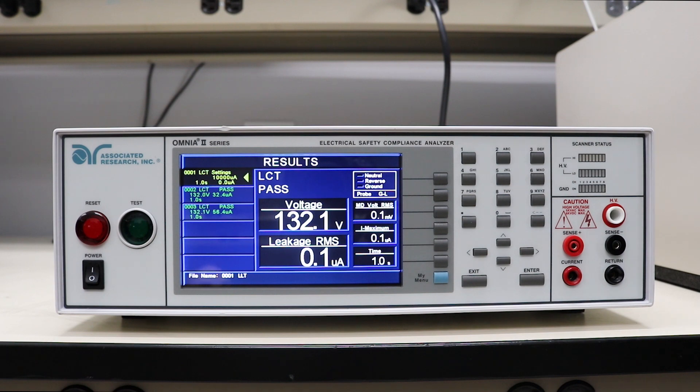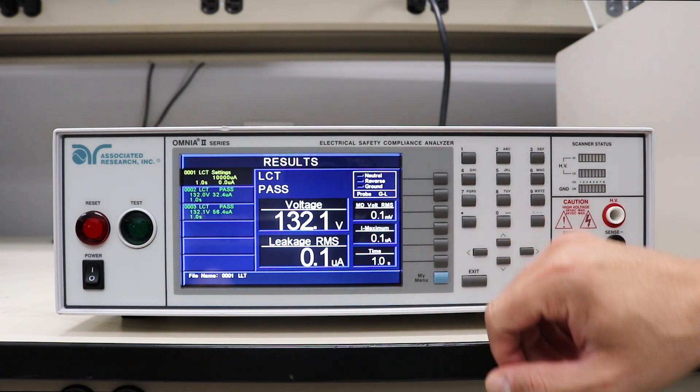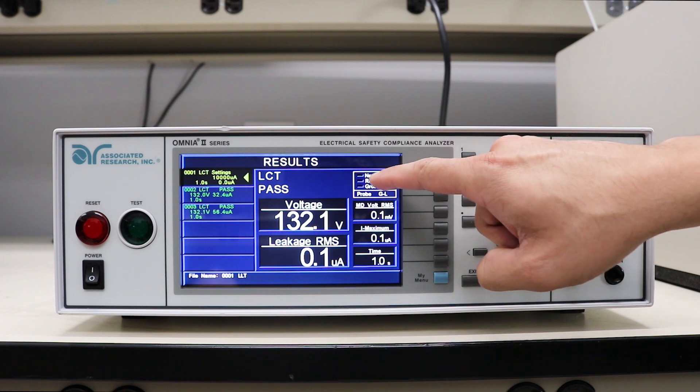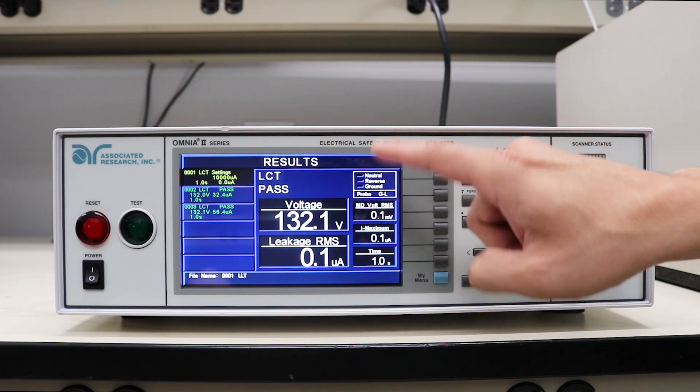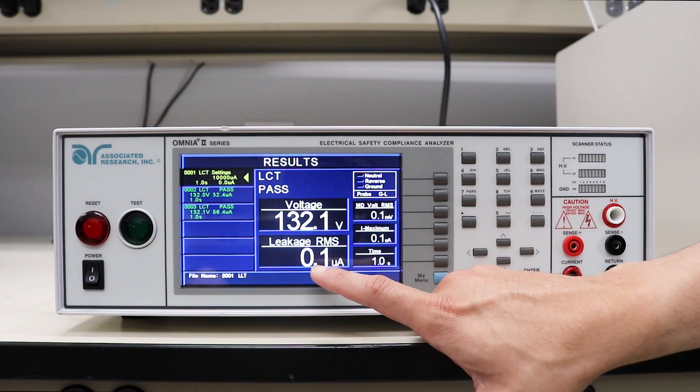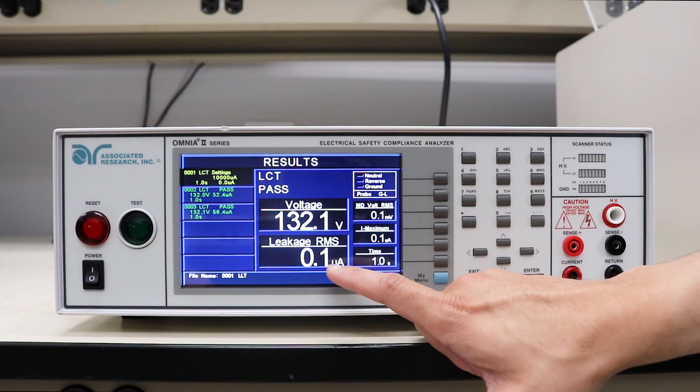Let's take a look at the test results from our three earth leakage test steps that we just executed. This is the first test step where 132 volts were applied. As you can see, for the fault conditions everything was normal and the recorded leakage current was negligible, very close to 0.1 microamps.